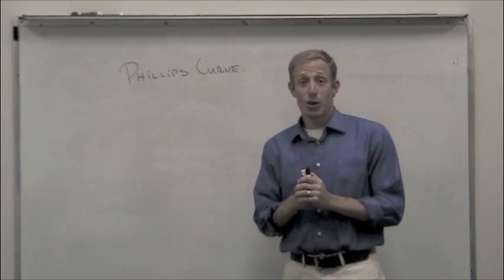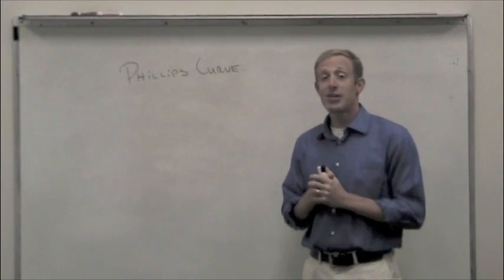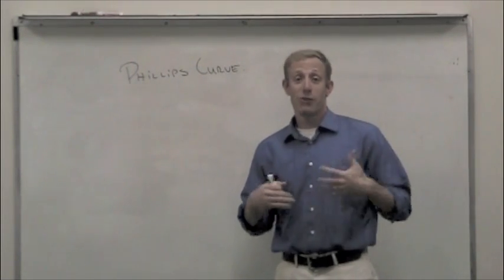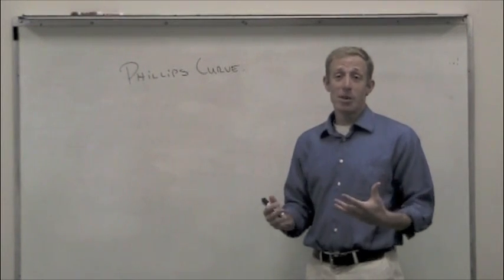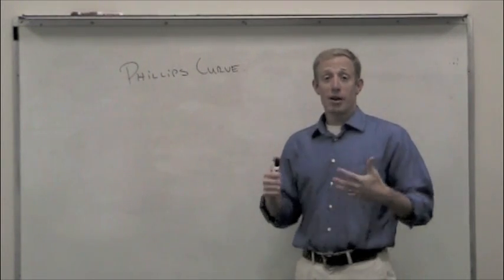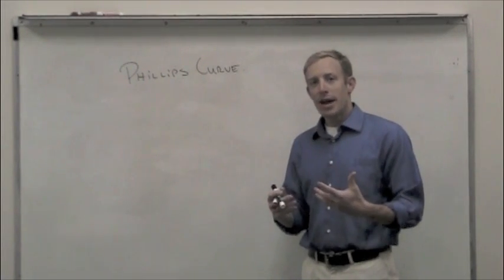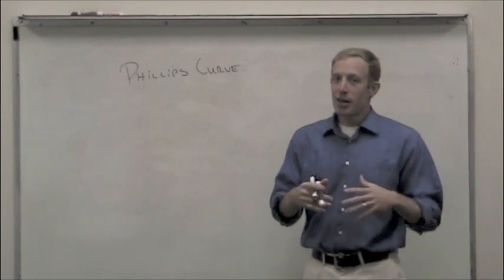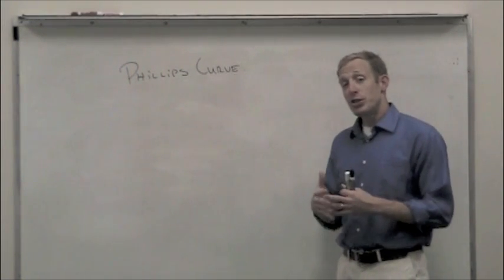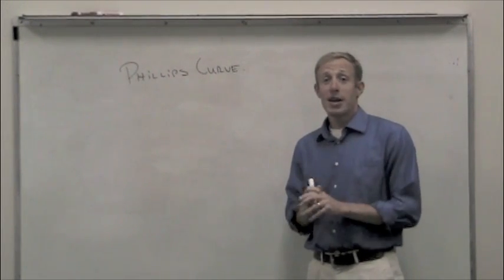Okay, now we're going to talk about the Phillips Curve. The Phillips Curve is this really curious relationship that exists between unemployment and inflation. The Phillips Curve has been written about by a lot of different people, but it gets its name from a British economist, A.W.H. Phillips, who in the mid-1900s wrote a paper illustrating the inverse relationship between unemployment and inflation over a long period of time in the United Kingdom.